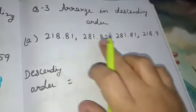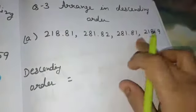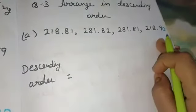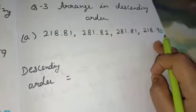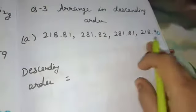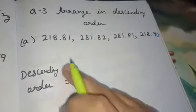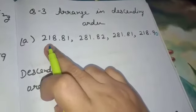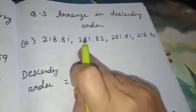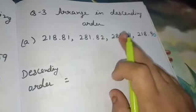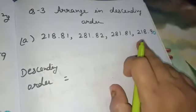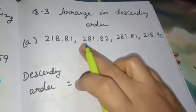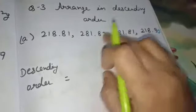Here, the digits after the decimal are 2 and 1 in some numbers and only 1 in another, so add a zero to make them like decimals. Now, as I have the like decimals, let us start with the biggest number. In descending order, we start with the biggest. First compare the whole part: we have 218 and 281. Such confusing questions can be asked in exams too — the digits appear the same but the numbers are different.